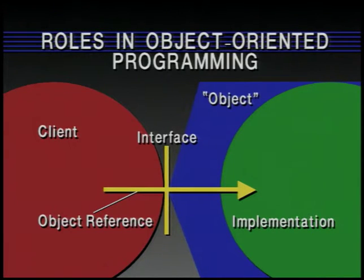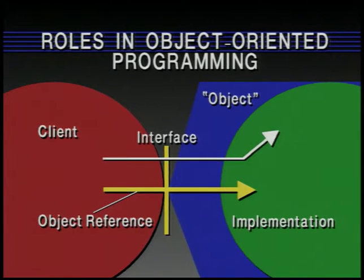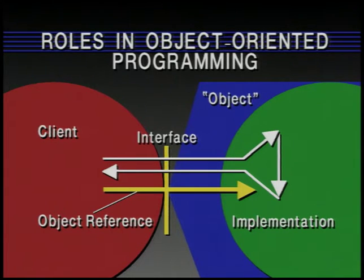An operation is a transfer of control and data. A client initiates the call; the object reference determines where the call goes; the operation specified determines what code is executed; parameters get transmitted to where the object is implemented; control transfers there; the implementation runs and produces results; those results are transmitted back; and control returns to the client. The client effectively sees this as a procedure call, and the implementation sees it as a procedure call that seems to come out of nowhere. When I say 'object,' I mean the abstract entity specified by an object reference.